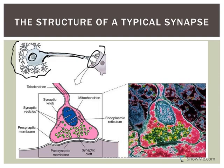Zooming in on those synaptic knobs — this could be another neuron, a muscle, or a gland. You'll notice there's a little gap. As a result of action potentials being propagated along the axon, there will be exocytosis of neurotransmitters stored in synaptic vesicles. They pass through this synaptic cleft, and there are receptors located on the post-synaptic membrane. That will be involved in telling a muscle to contract, telling a gland to release a hormone, or allowing communication to travel to the next neuron.